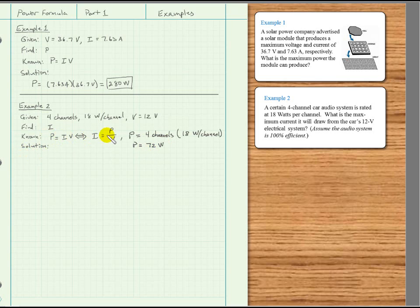So now we're ready to use this expression. I equals the power, 72 watts, divided by the voltage, 12 volts, and that's going to equal 6 amps. That will be the maximum current drawn by this car audio system.